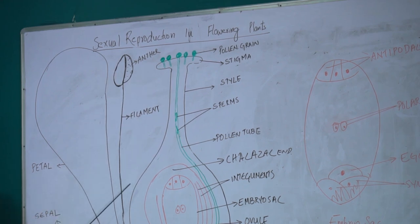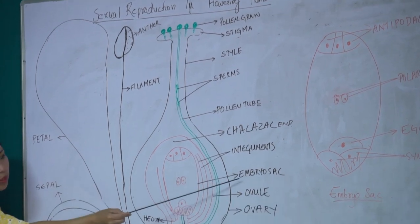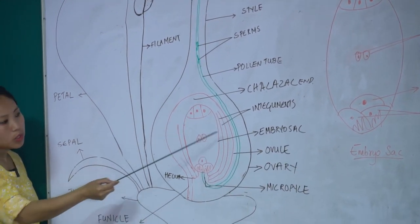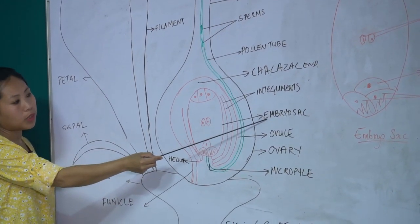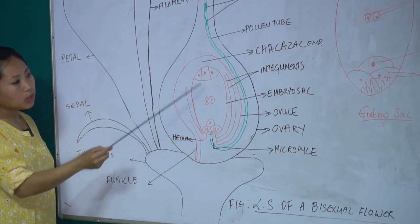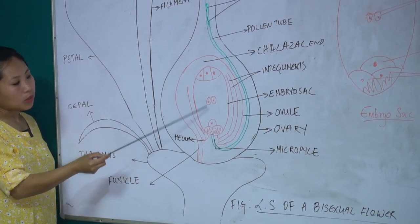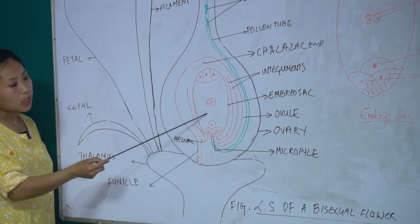The development of the pollen grain in the anther and the development of the embryo sac take place simultaneously. During development, the microspore mother cells undergo meiotic division to give rise to pollen grains. On maturation, the anther breaks open and the pollen grains are released into the environment. The embryo sac, also called the female gametophyte, encloses eight nuclei.